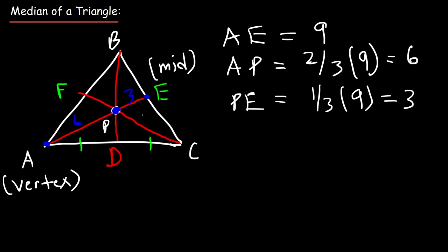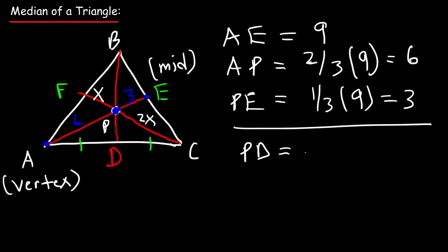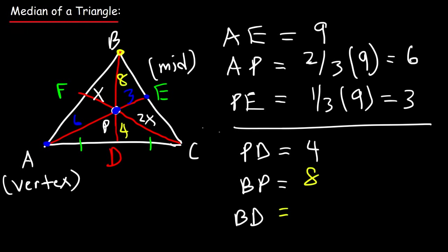So A is the vertex, E is the midpoint, and P is the centroid. We can say CP is twice the value of FP. Now if PD equals 4, what is BP and BD? PD is the distance between midpoint and centroid, so BP — the vertex-to-centroid distance — is twice that value: 8. The median BD is the sum of PD and BP, so BD equals 4 plus 8, which is 12.